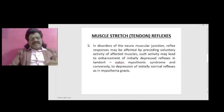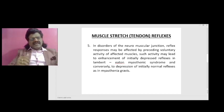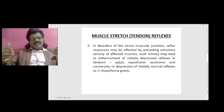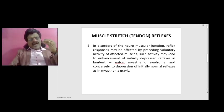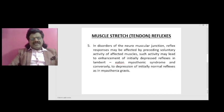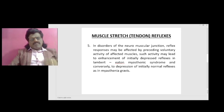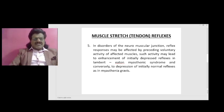In contrast, what happens in myasthenia gravis, which is a post-synaptic disorder: with repeated activity, the reflexes become lesser and lesser. Conversely, there is depression of initially normal reflexes in myasthenia gravis. So in myasthenia gravis, initially the reflexes may be normal, but with repeated activity the reflexes become decreased and depressed.